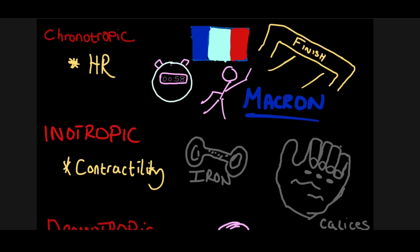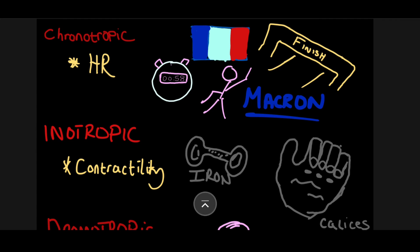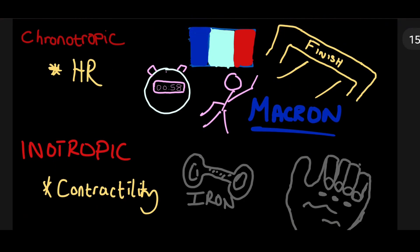First, chronotropic. What does this sound like? Macron. Who is Macron? President Macron of France. He's in a marathon, right? He is against the clock. His heart rate is going up. Chronotropic is all about the heart rate.